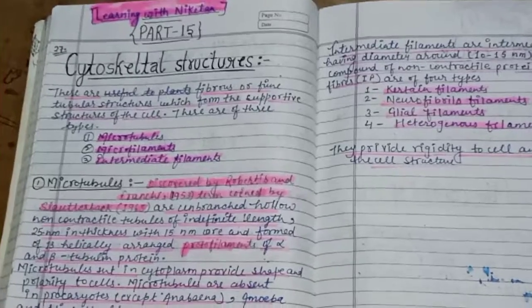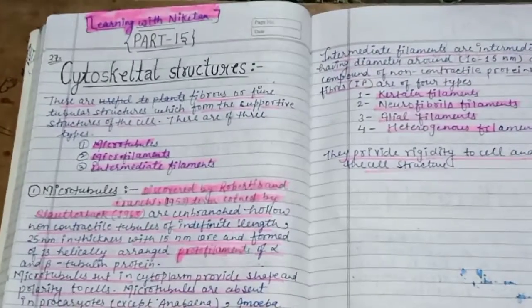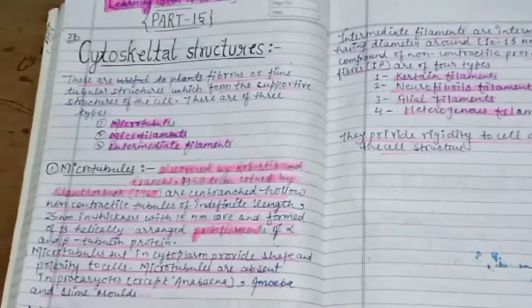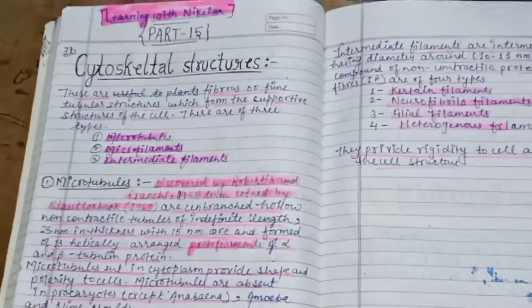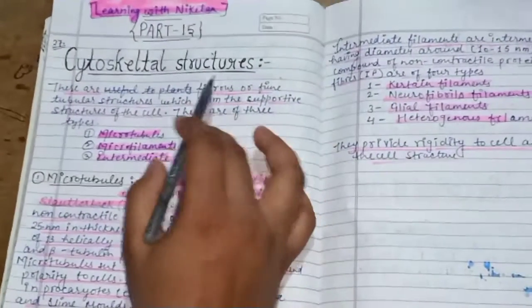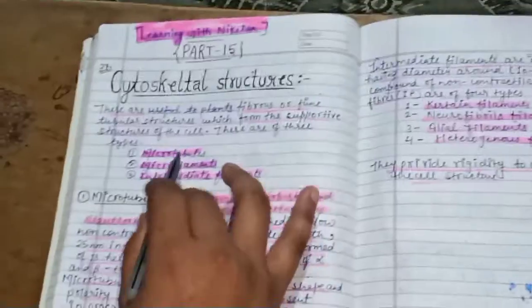Welcome to my YouTube channel, Learning with Kethan. In this part 15, we will discuss cell biology, specifically cytoskeletal structures. Cytoskeletal structures are fibrous or tubular structures that form the supportive structure of the cell.